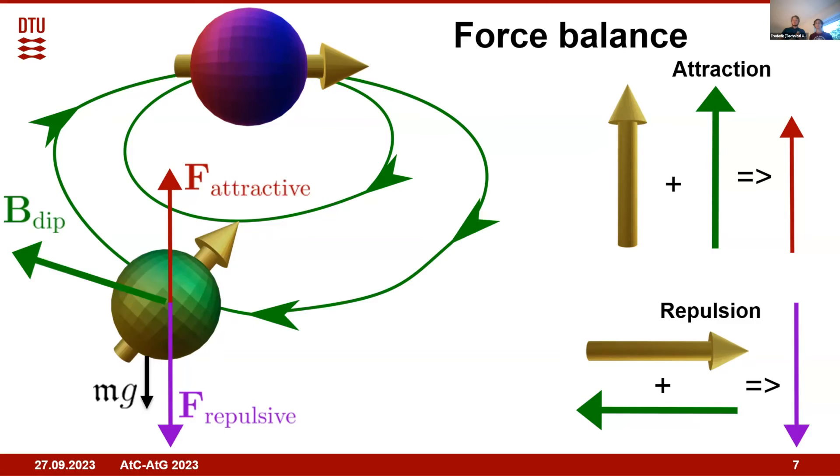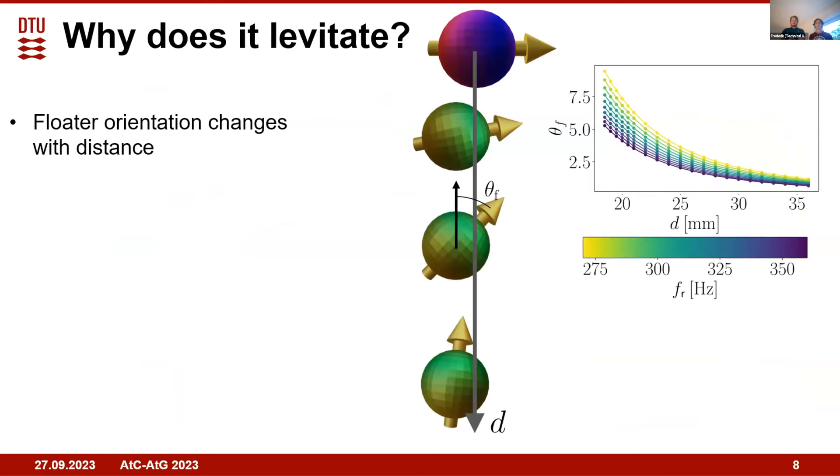Now why does this start from rest and why is it stable? Because of this balance between the gyroscopic torque and the magnetostatic torque, the steady state orientation of the floater will be a function of distance. It will be more horizontal when the magnets are close to each other and more vertical when they are far away.